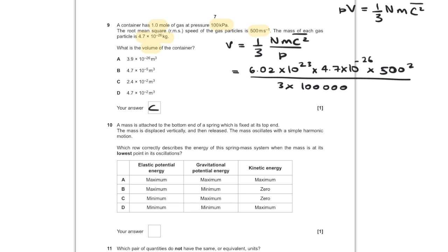For question number ten, a mass is attached to the bottom end of a spring fixed at the top. The mass is displaced vertically and released, oscillating with simple harmonic motion. At its lowest point: it has maximum elastic potential energy because the spring is stretched to its maximum; minimum gravitational potential energy because it is at the least height; and zero kinetic energy because it is not moving. So B is the answer.